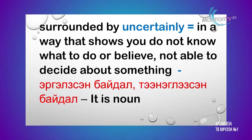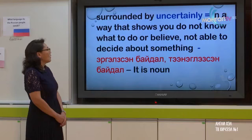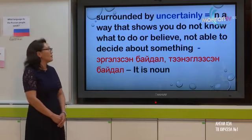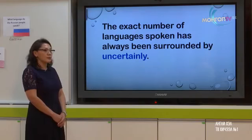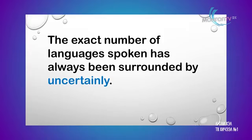Next word is 'uncertainty' — as in 'surrounded by uncertainty'. It means not knowing what to do or believe, or not being able to decide about something. It's a noun. The sentence in the text is: 'The exact number of languages spoken has always been surrounded by uncertainty.' Listen and repeat: uncertainty.